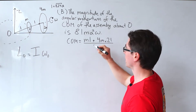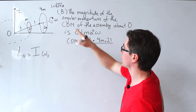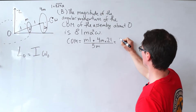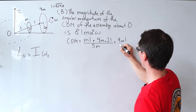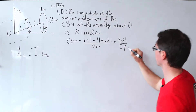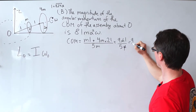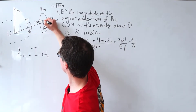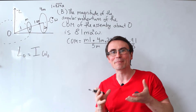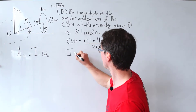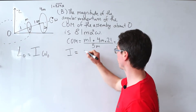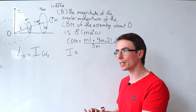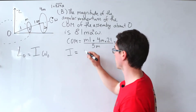Dividing by the total mass 5m gives 9l/5. The center of mass sits at distance 9l/5 from the origin. Since the center of mass is just a point, its moment of inertia is mass times distance squared: I = 5m · (9l/5)² = 5m · (81l²/25) = 81ml²/5.